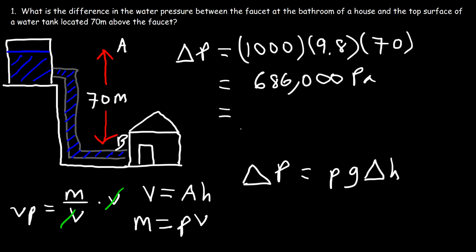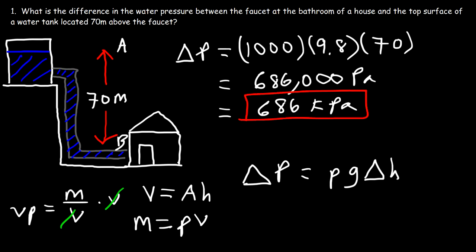In kilopascals, just divide by a thousand. So this is 686 kilopascals. That's the difference in pressure between points A and B given a height of 70 meters.